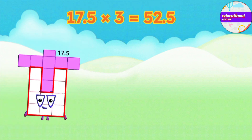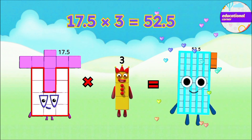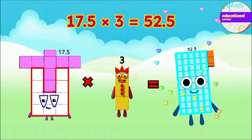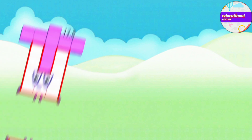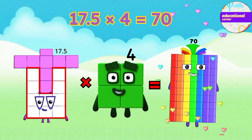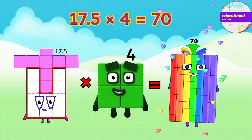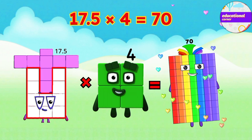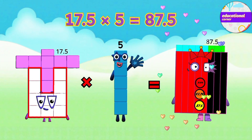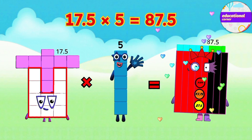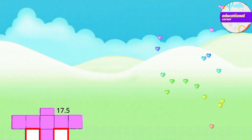17.5 multiplied by 3 equals 52.5. 17.5 multiplied by 4 equals 70. 17.5 multiplied by 5 equals 87.5.